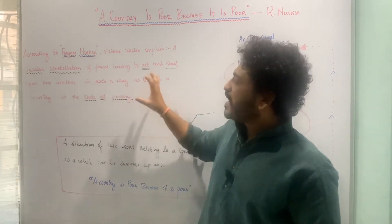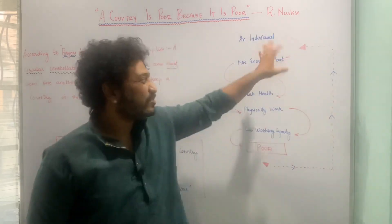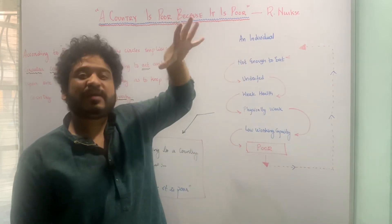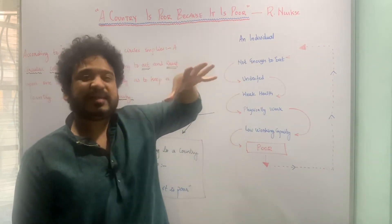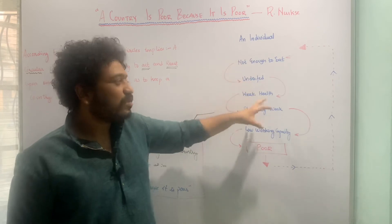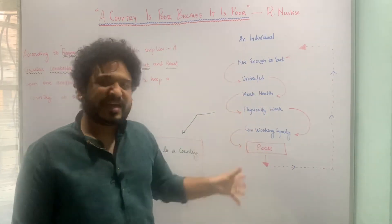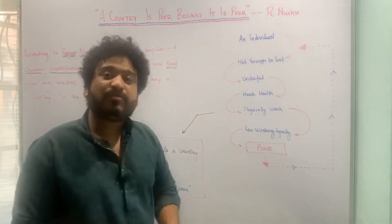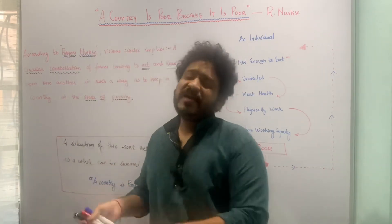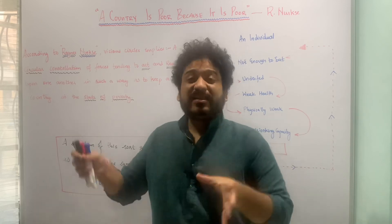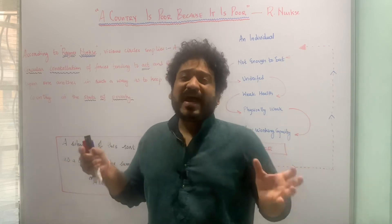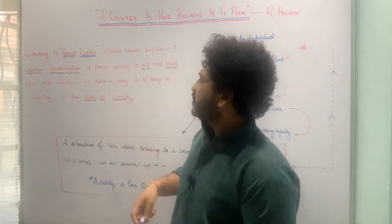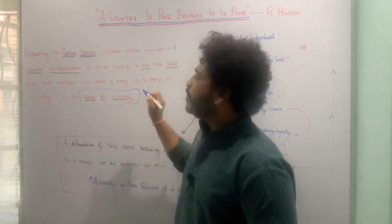This is what Nurkse talked about: this circular thing happening at a micro level, and when you view it on a macro level, you see a circular arrangement working in the entire economy. Apart from this, there is a circular constellation of forces operating on the demand side as well as the supply side, and these forces are acting upon each other and keeping a country in a state of poverty.